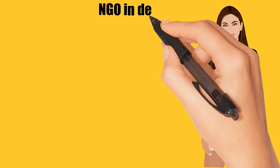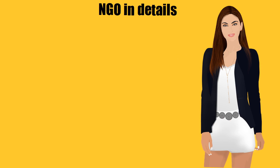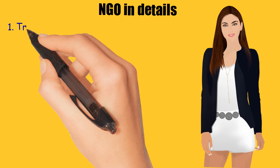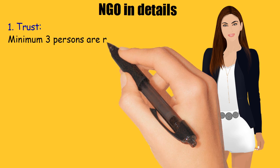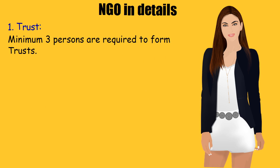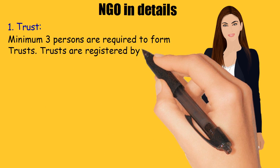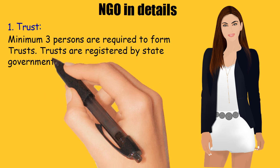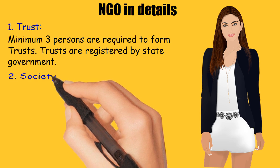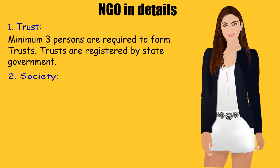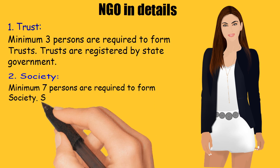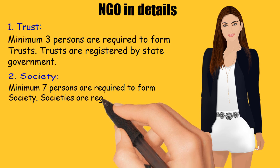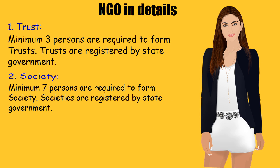NGO in detail. 1. Trusts: A minimum of 3 persons are required to form a Trust. Trusts are registered by the State Government. 2. Society: A minimum of 7 persons are required to form a Society. Societies are also registered by the State Government.